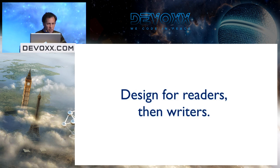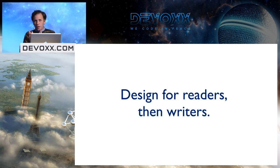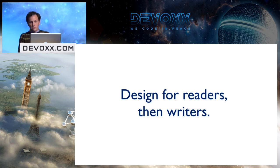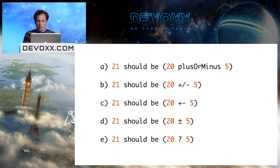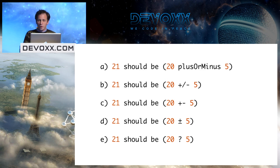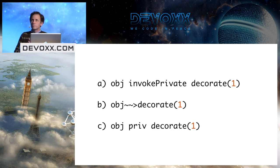Code is read and it is written, and my theory is that it's read more than it's written. So both activities are important, and you want to design to make both writers and readers happy. Sometimes those two roles are in tension. What I try to do is resolve that tension so both are equally happy — but if I can't, I favor the reader over the writer. For example, `plusOrMinus` is verbose and a pain to write, but the reader knows exactly what it means.